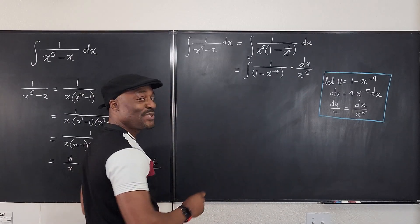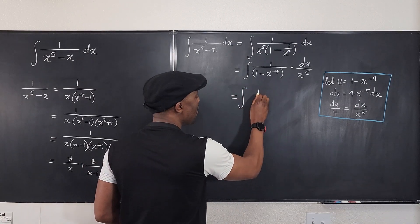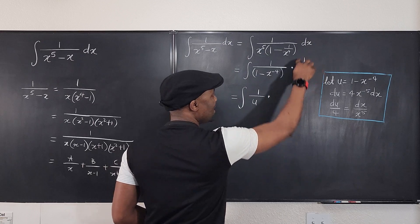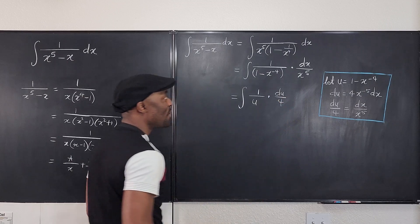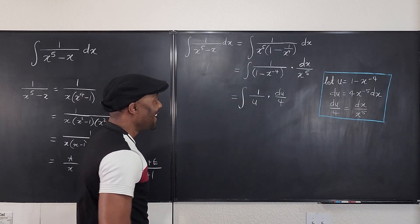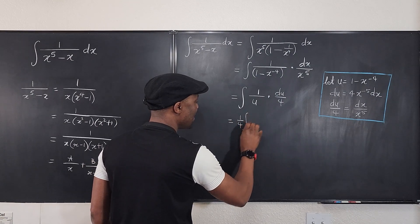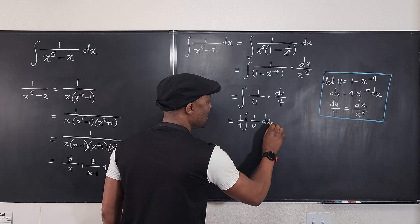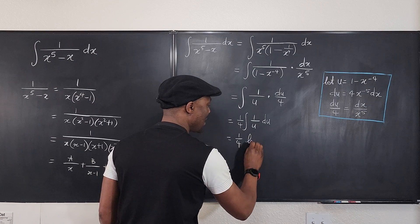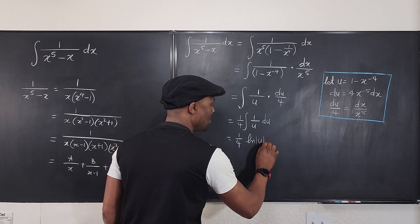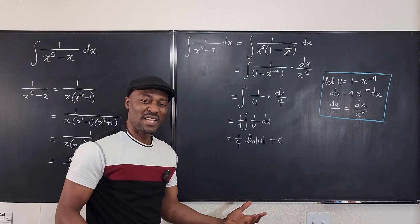So we can go back and say this integral is the same thing as the integral of 1 over u times du over 4. This is going to be equal to one-fourth of the integral of 1 over u du. And what does that give me? It gives me 1 over 4 times the natural log of the absolute value of u, plus C.